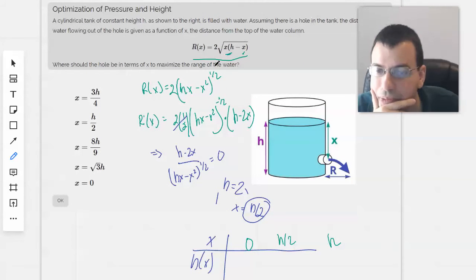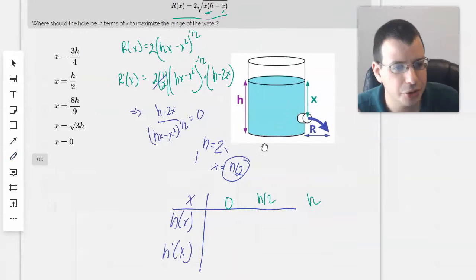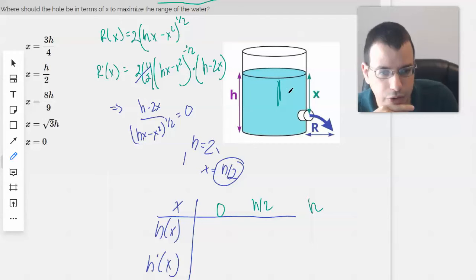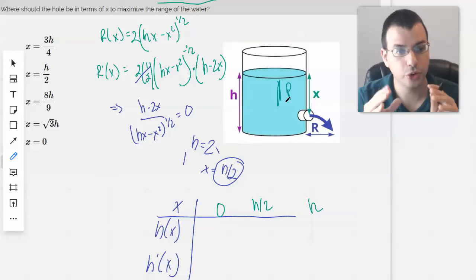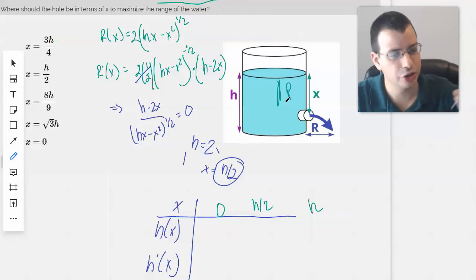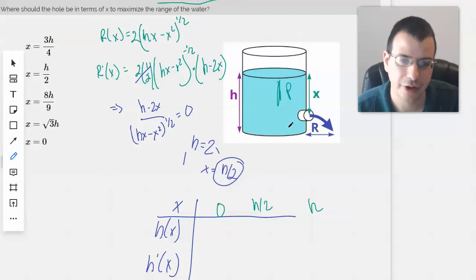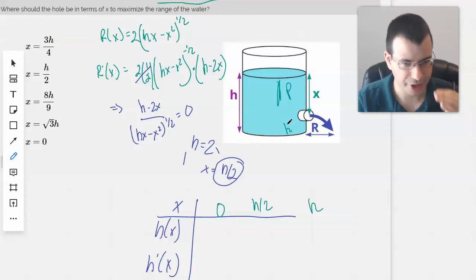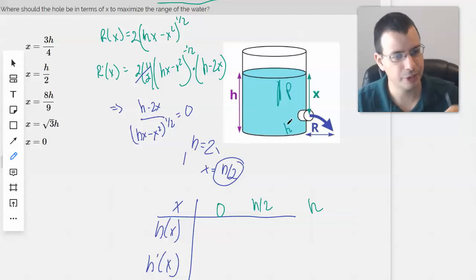We should do... So we have two things playing off each other. We have the water pressure up here. So the lower the hole, the greater the water pressure is going to be. And so the more velocity that water is going to shoot out of. But then we have, basically, height down here, so that it will be further that it will be able to shoot before it hits the ground.